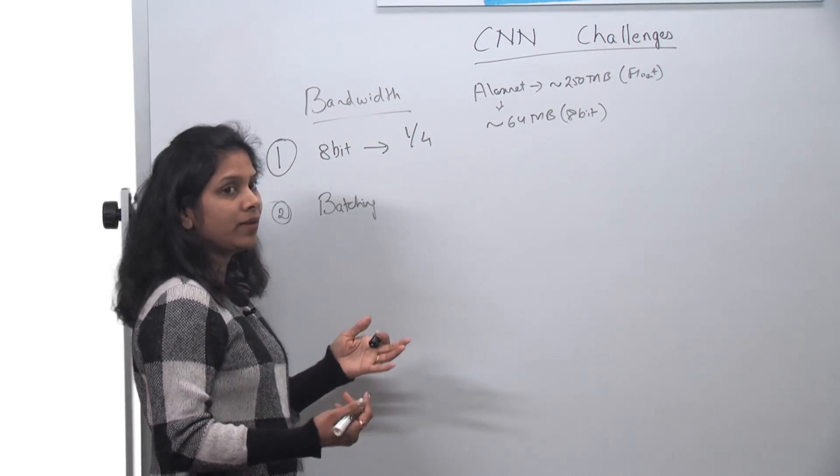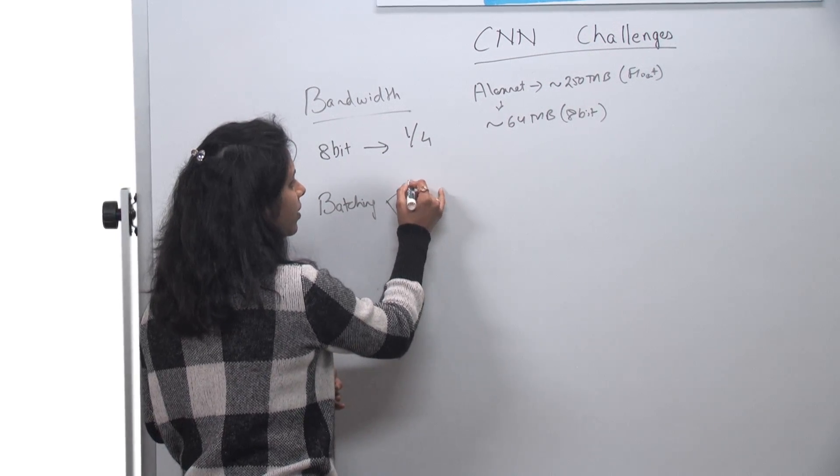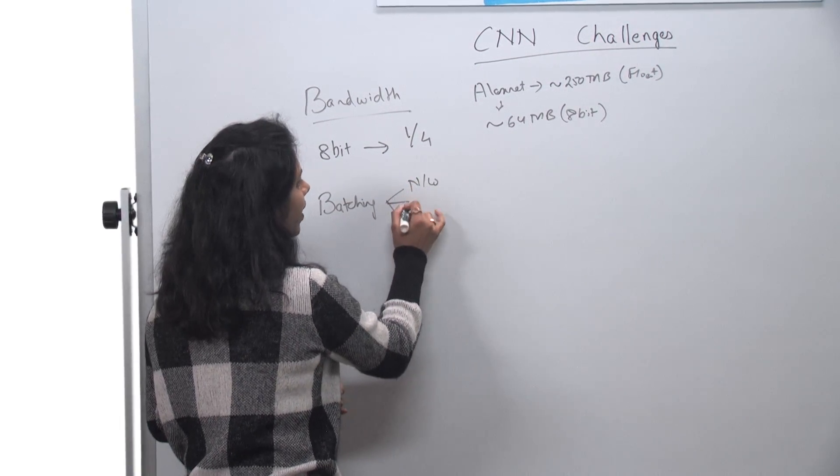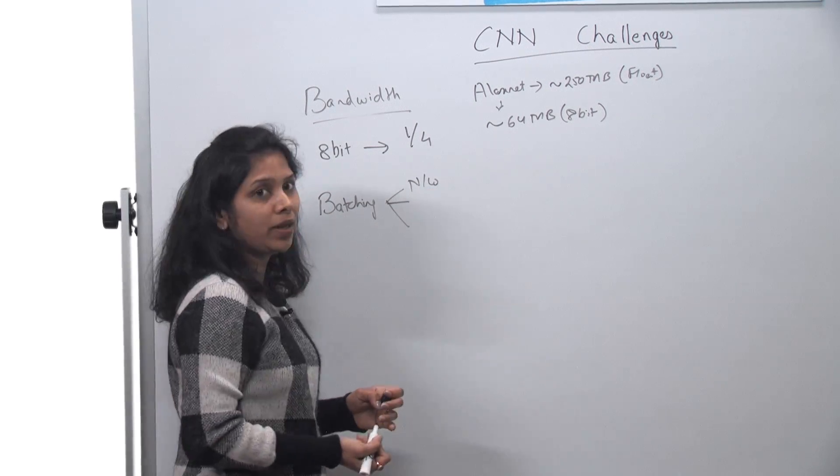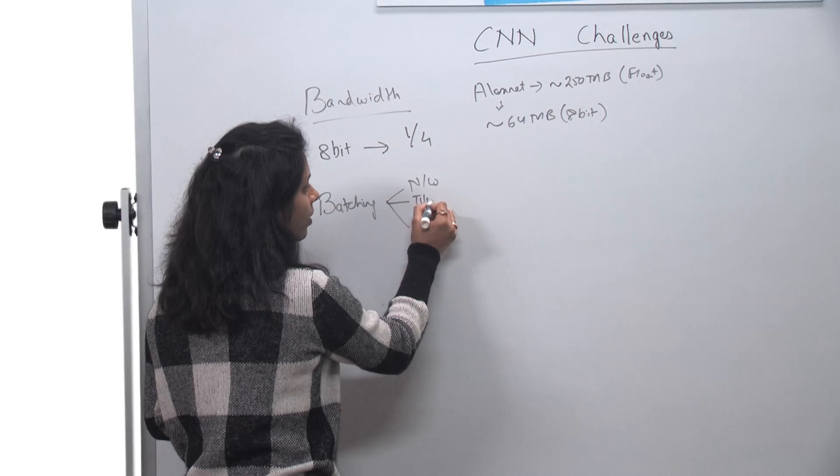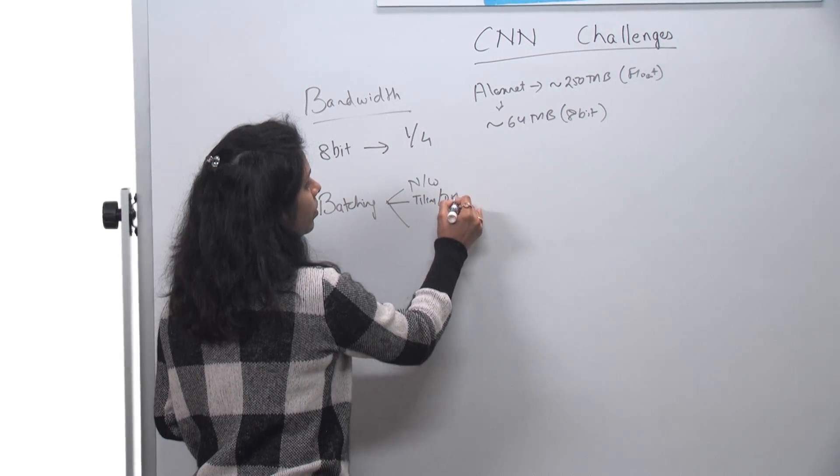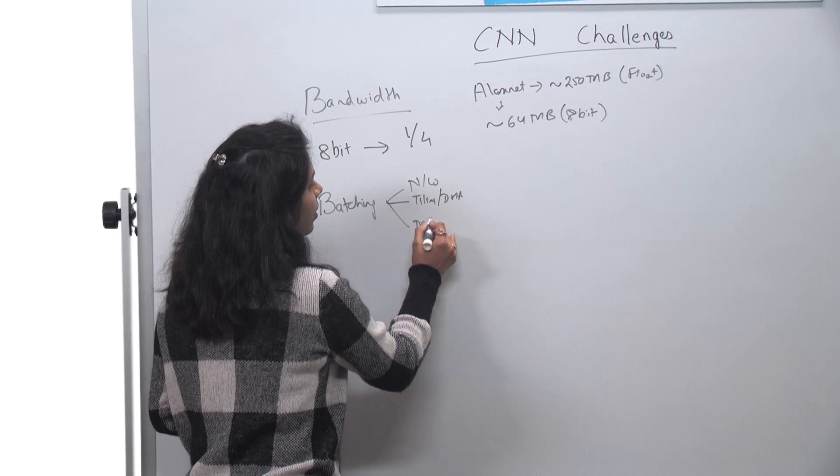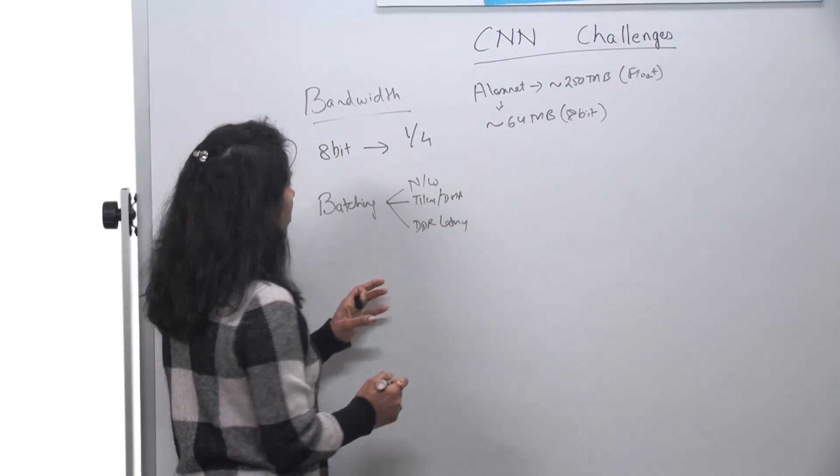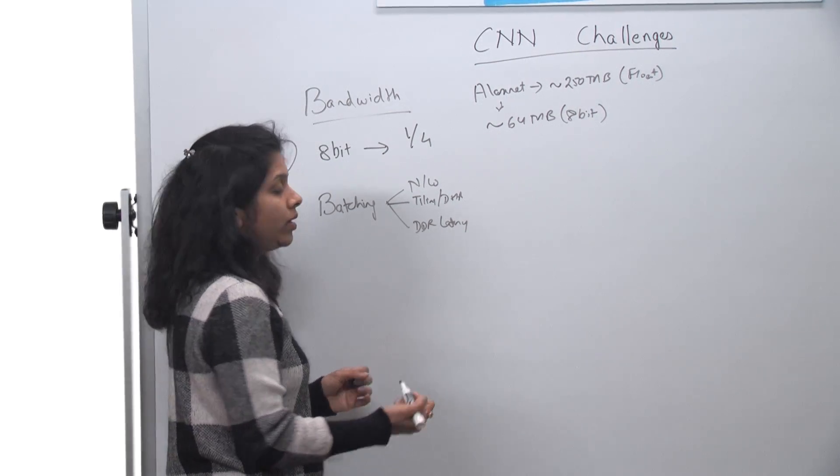Now batching, people have shown, it really depends on multiple factors. We talked about the network, right? So network can be one of the factors. So inside network, what will affect your tiling or what kind of DMA you use, your DDR latency, your system-related stuff. Everything will affect what kind of batching you end up doing, or what number of batching you end up doing.